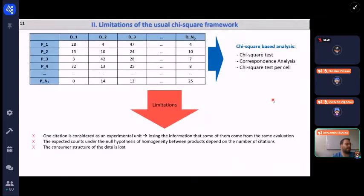However, some limitations might be underlined for this analysis because when using the usual chi-square framework some information are not taken into account. The first one is that one citation is considered as an experimental unit, which means that we are losing the information that some of them come from the same evaluation provided by the same consumer for the same product. The expected counts under the null hypothesis of homogeneity between the products depends on the number of citations the products receive, so the null model is not exactly the one that should be used, and also the consumer structure of the data is lost.